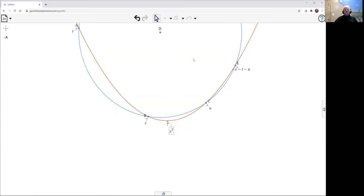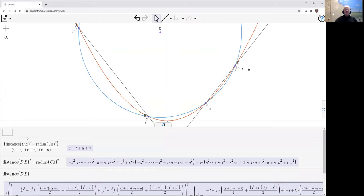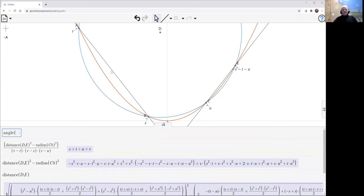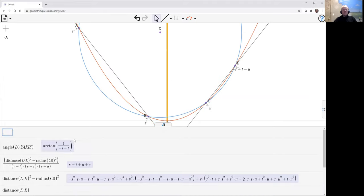And now what we're asked is to show that the lines that join the opposite pairs have the same angle to the axis. So if I ask for the angle in that line and the y-axis, I get arc tangent of 1 over minus s minus t.